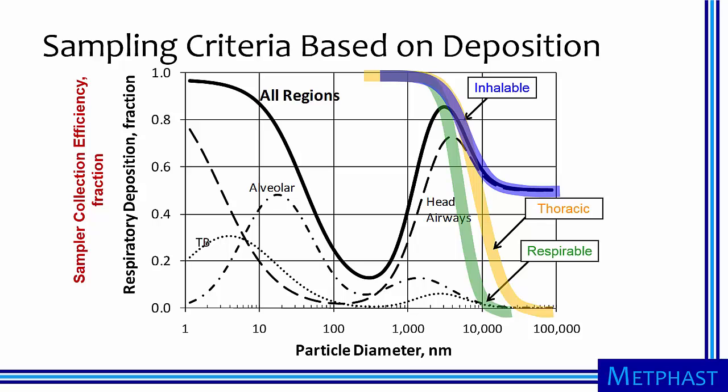Many occupational regulations require that particles are collected with specific sampling efficiencies called sampling criteria, which are based on deposition in the human respiratory system. Inhalable samplers collect those particles that can be aspirated into the human respiratory tract. The inhalable criterion, shown in blue, follows the respiratory deposition fraction for particles larger than 5 micrometers.